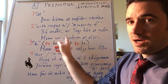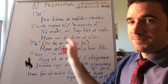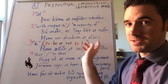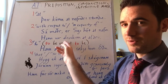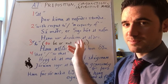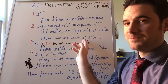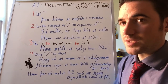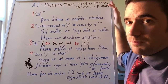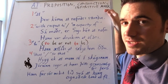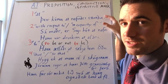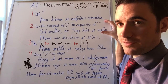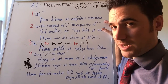Similarly, 'hann var alroskinn at aldri' — he was mature with respect to age. We've already established that he's a mature person, a person who's full-grown, but then we have this sort of unnecessary 'in the capacity of' phrase with 'at.' Both when functioning as a preposition meaning 'at' and in these redundant 'in the capacity of' or 'with respect to' phrases, 'at' takes a dative object. Notice that 'stundu', 'aldri', and 'nafni' are all in the dative.